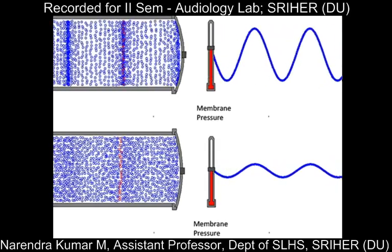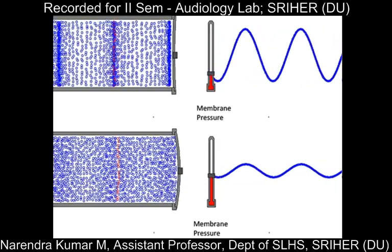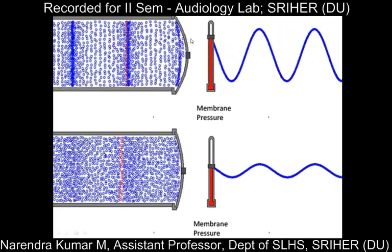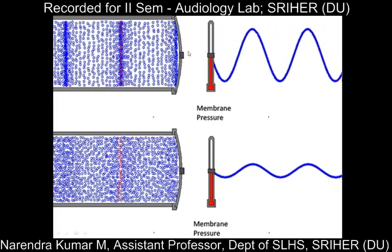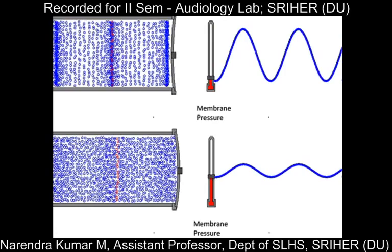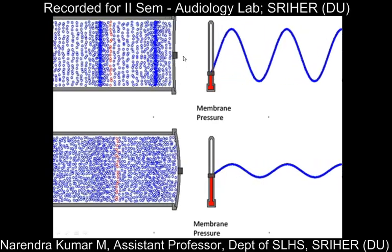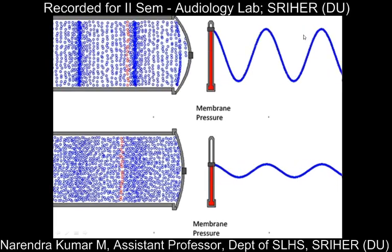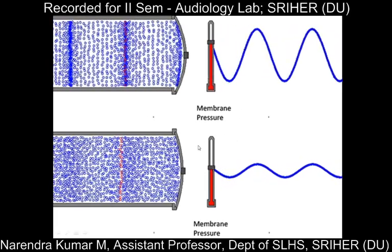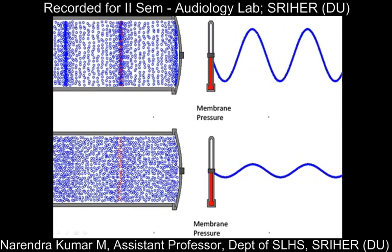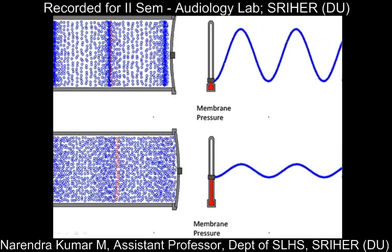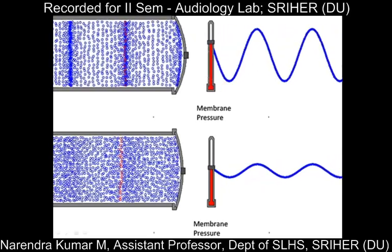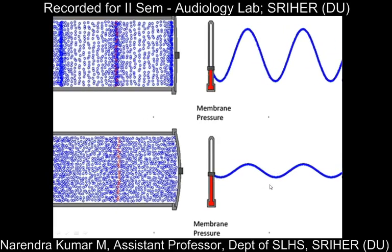Here we can see an example where the topmost panel shows higher power. When the power is more, the work done is quicker, and as a result we can see a large amplitude sound wave. When lesser power is applied, the force exerted on the membrane is less, so the distance moved by the air particles is less and the resultant sound wave is soft.